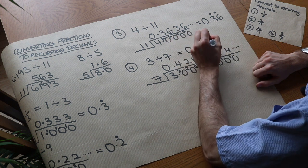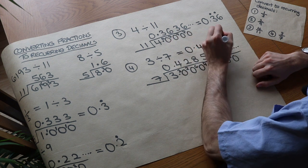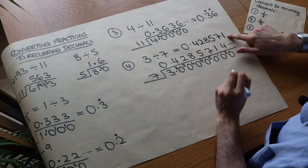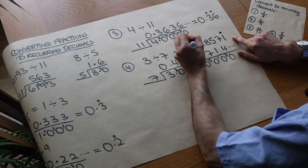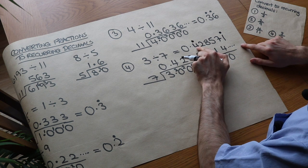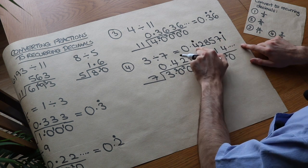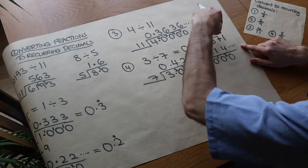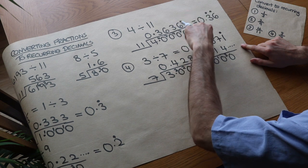So 4, 2, 8, 5, 7, 1. Don't put the 4 again because what we do is we put a dot here, a dot here and that means we're repeating between the 4 and the 1. So it goes 4, 2, 8, 5, 7, 1 and then we go back to the first dot. 4, 2, 8, 5, 7, 1.